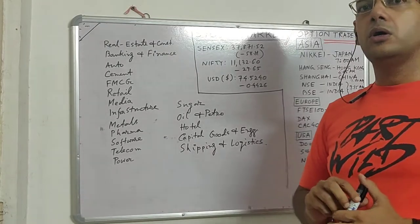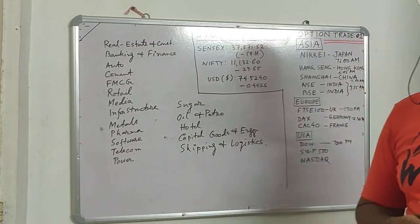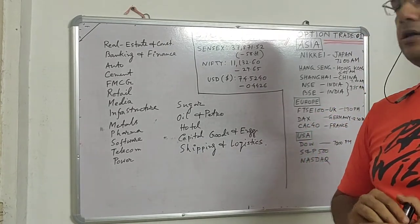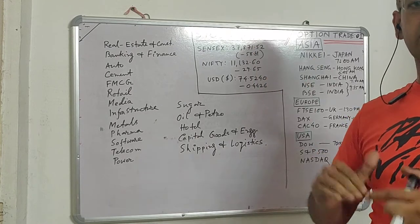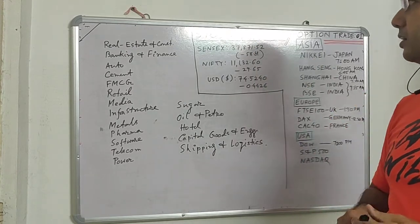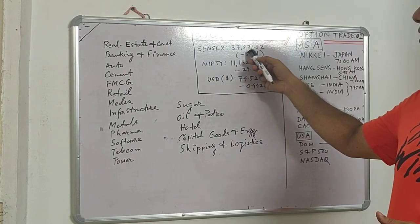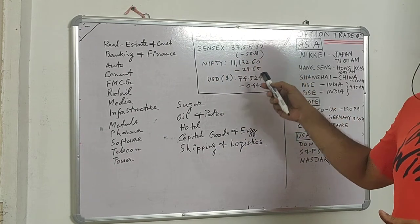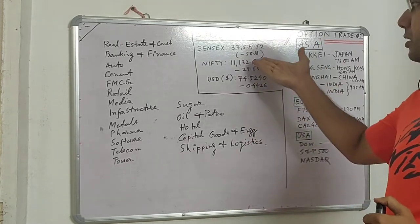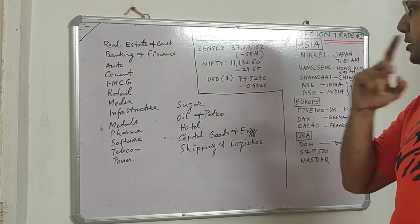So what is stock market? Everybody knows it comes up every day on television channels and other media — Sensex reports, day-to-day up and down. For example, today's Sensex is 37,871, a downfall of 15 points.